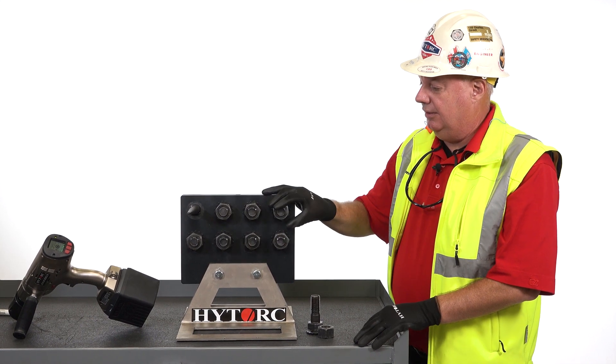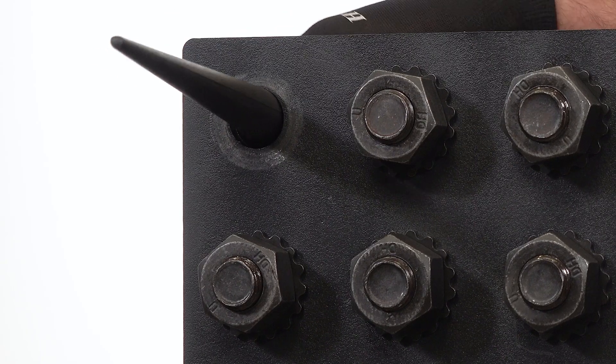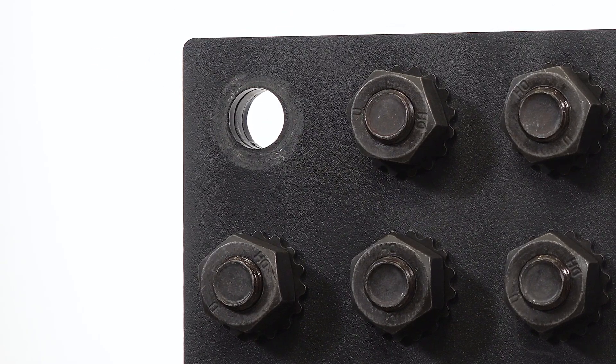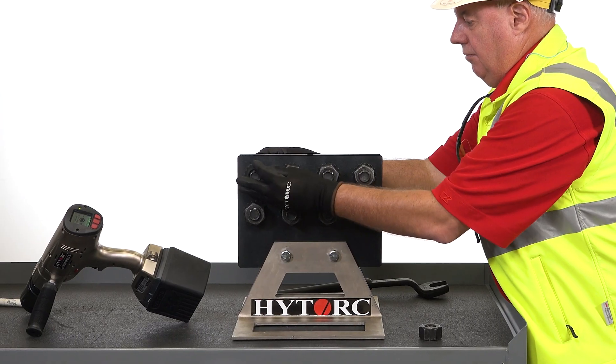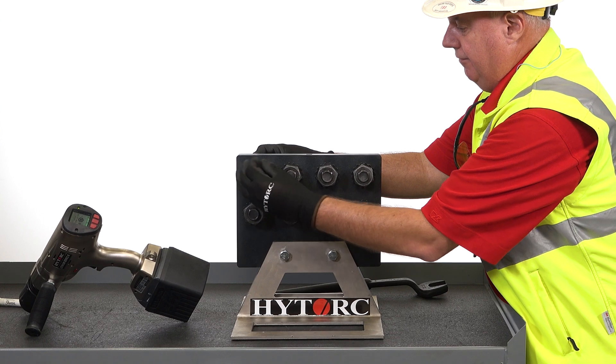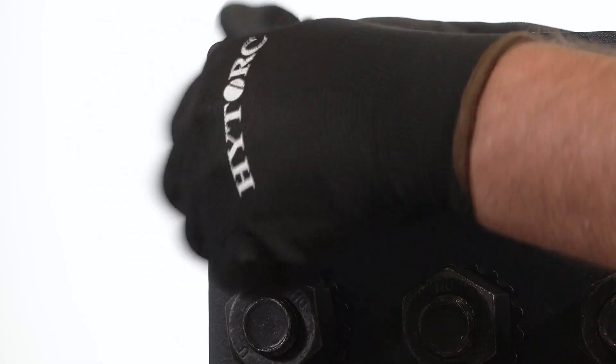These bolts have all been snug tightened, so now we're up to the step where we can remove the drift pins, install the last few bolts, and snug these so that we will be able to then move on to final tightening.